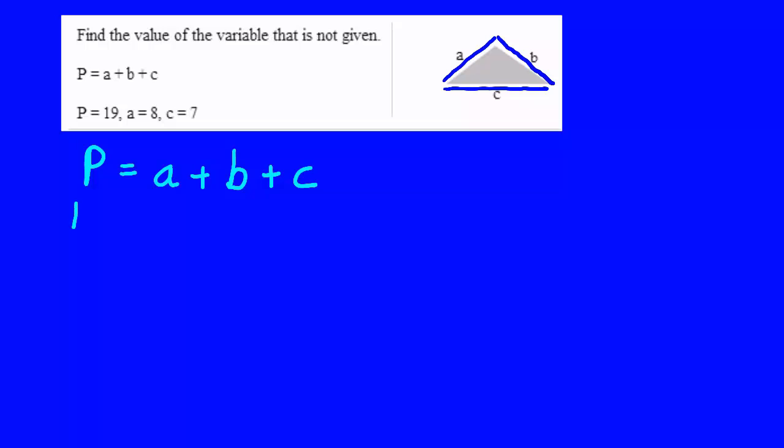And we're told what P is. It's 19 units long. That's all of the sides added together. We're told what A is. It's 8 units long.